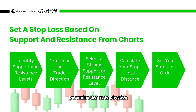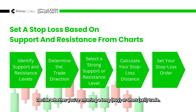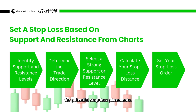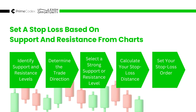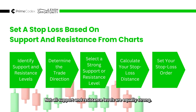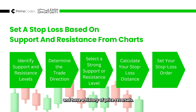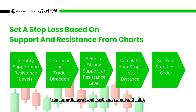Next, determine the trade direction. Decide whether you are entering a long or short trade. If you're going long, focus on identifying nearby support levels that can serve as potential stop loss locations. If you're going short, look for nearby resistance levels for potential stop loss placement. Then, select strong support or resistance levels — not all levels are equally strong. Look for levels that have been tested multiple times and have a history of price reversal. The more times the level has been tested and held, the stronger it is considered to be.